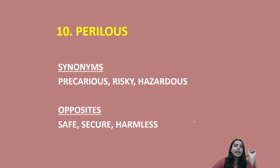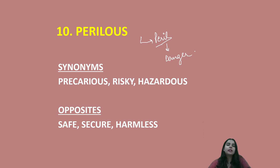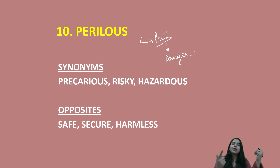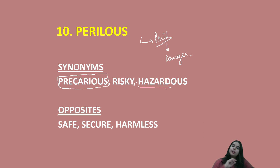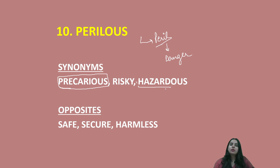The last word for today's set is perilous. The root word is peril, which means danger, so perilous means dangerous. Better synonyms you can use in place of dangerous: risky, hazardous, precarious — precarious and perilous are very important words you must know. If something is hazardous, risky, dangerous, or precarious, then what is the opposite? Safe, secure, harmless — something which is free of danger. So those are the opposites of perilous.